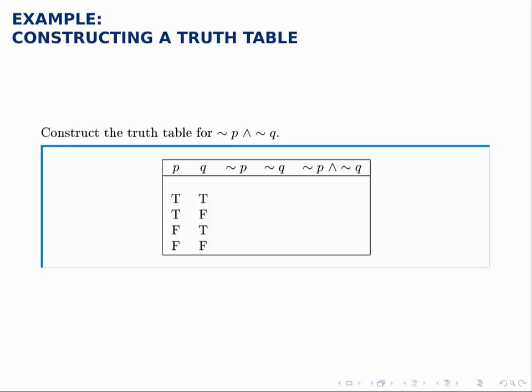So for not P, all I have to do is look at the P column and apply the negation. Remember the negation switches trues to falses and falses to trues, it just flips the truth value. So this would look like false because the first entry is true, then false again, and then true, and then true.